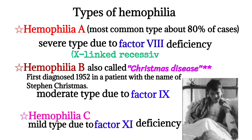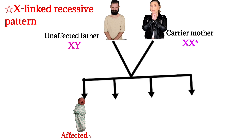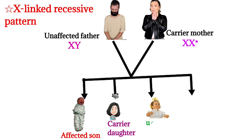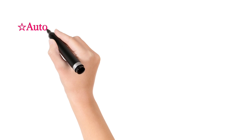Regarding inheritance: Haemophilia A is X-linked recessive, Haemophilia B is X-linked recessive, and Haemophilia C is autosomal recessive. In the X-linked recessive pattern, an unaffected father and a carrier mother can give birth to one affected son, one carrier daughter, one unaffected daughter, and one unaffected son. Males are more exposed because they have only one X chromosome. In autosomal recessive, one mutated gene comes from the father and one from the mother.